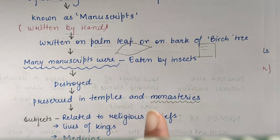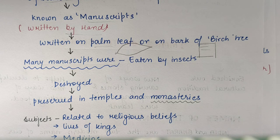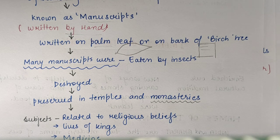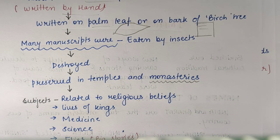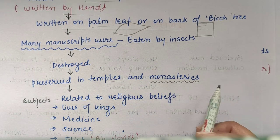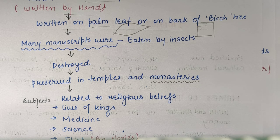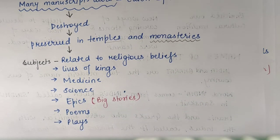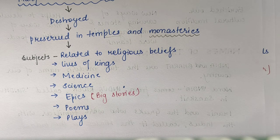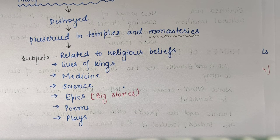Many manuscripts were destroyed, and some got preserved also — bahut saari destroyed ho gayi aur kuch bach gayi. Which ones survived? Those which were preserved in temples and monasteries. Monasteries are places where Buddhist and Jain people pray — jaise Hindu log temple mein jaate hain, toh Buddha aur Jain log monasteries mein jaate hain for meditating and all.